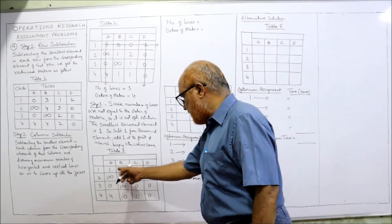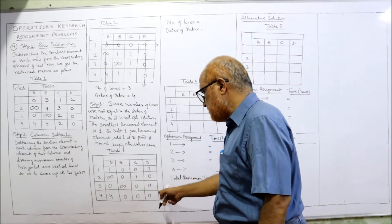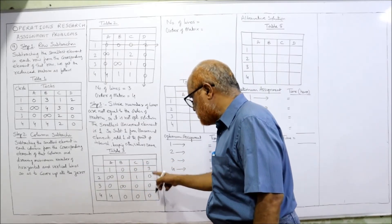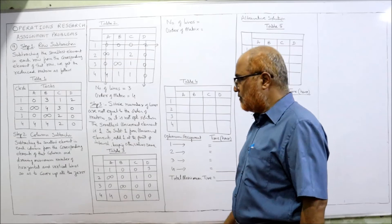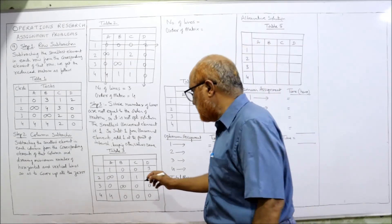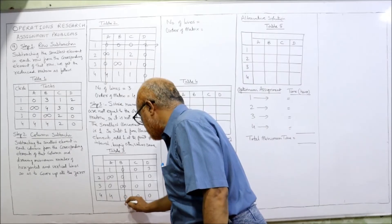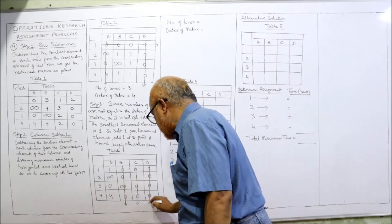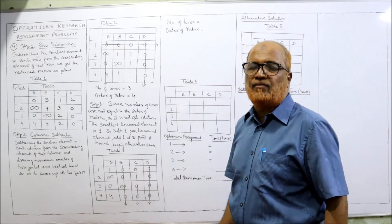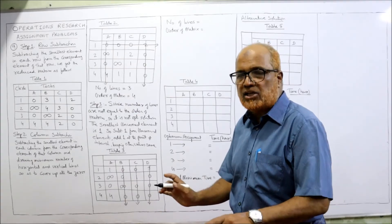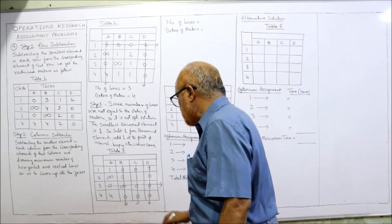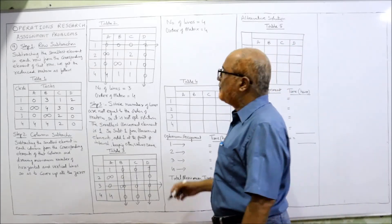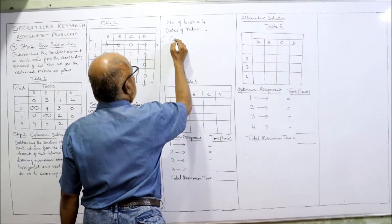Looking at the new matrix, the maximum zeros we can cover in a single line: row-wise two, two, three, three zeros; column-wise one zero, three zeros, three zeros, three zeros. Taking vertical lines: three zeros cancelled in the first line, three in the second, three in the third, and one zero remains — any line covers it. Total lines drawn: one, two, three, four. Four lines and the order of the matrix is also four — the optimum solution is reached.